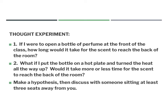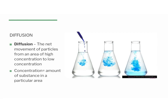Going back to question one: if I opened a bottle of perfume at the front, it would take a while for the scent to reach the back of the room. Certain people would smell it first — the people closest to where I opened the bottle. They would also smell it the strongest. The scent dissipates throughout the room, and by the time it reaches the back it may be very faint. For question two, putting it on a hot plate would speed things up, but people up front would still smell it first.